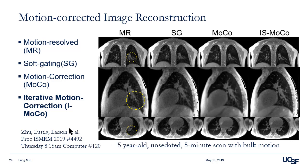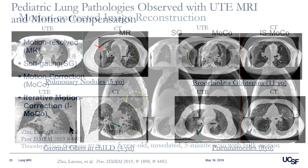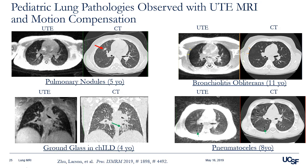Check out that work right after this session. A few more examples in pediatrics where it's essential to apply motion compensation and bulk motion rejection — we're getting nice visualization of pathologies including pulmonary nodules, bronchiolitis obliterans, ground glass opacities in interstitial lung disease, and small cysts or pneumatoceles. These are all in unsedated children aged four, five, eight, and eleven years old — quite a challenging imaging scenario.